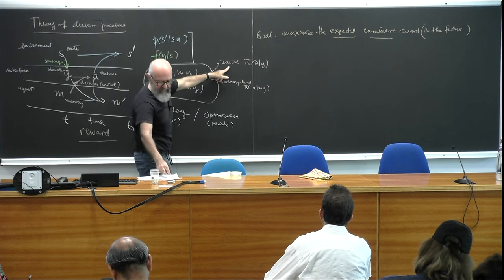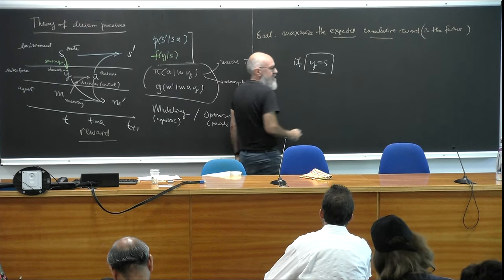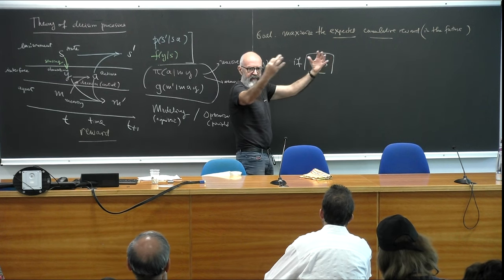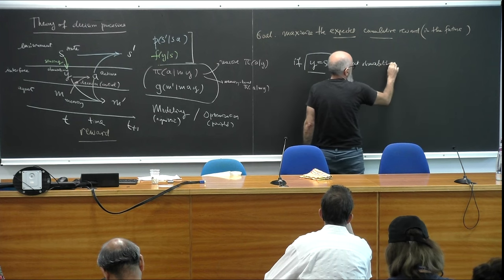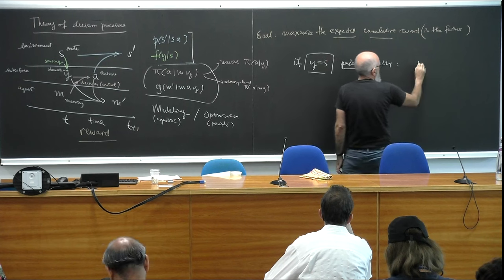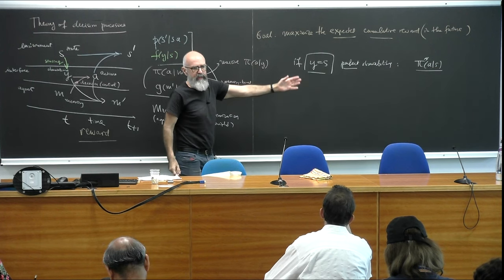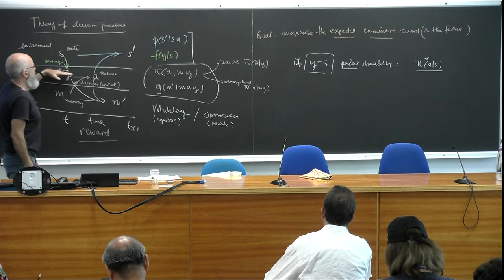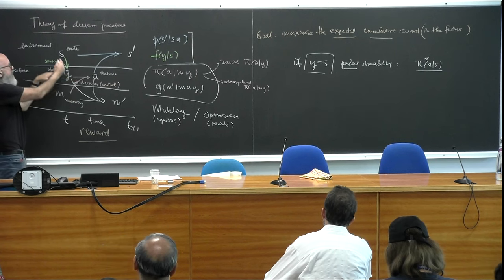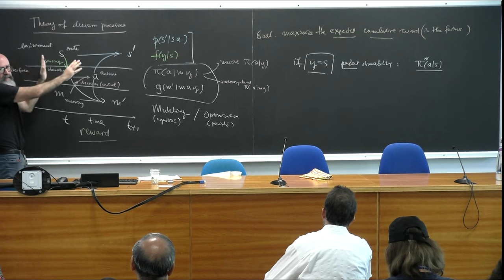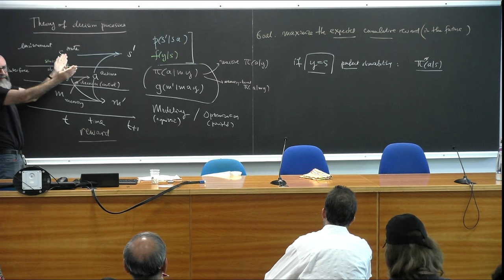There is one important exception: when the observations are the states themselves — called perfect observability — then you can have an optimal strategy that depends only on your percepts. Reactive strategies can be optimal in this case. Why? Because if you observe the state, the top part of this diagram is a Markov process per se — you don't need to keep memory since the state is already predicting everything about the future. But this is a very special case.